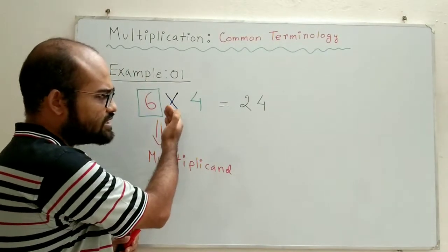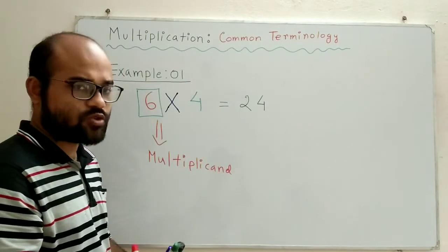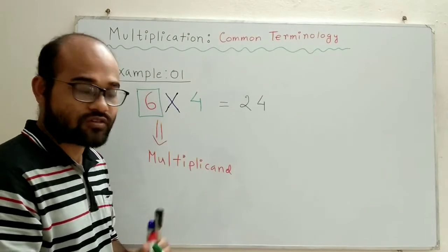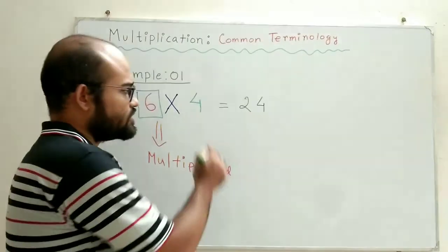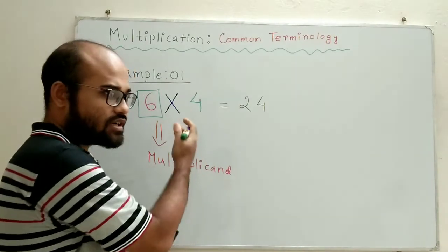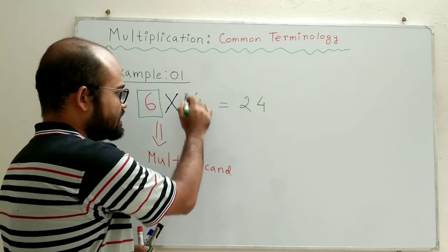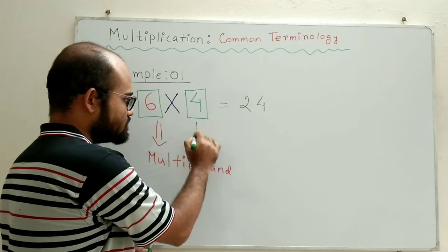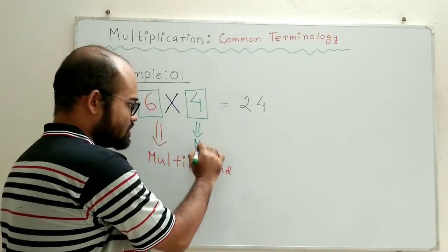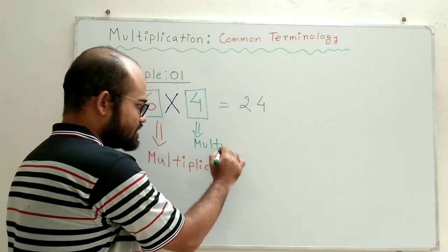Similarly, if we move immediately after the multiplication sign, what do we find? We find the number 4. So, numbers such as 4 which occur immediately after the multiplication sign are called multiplier.